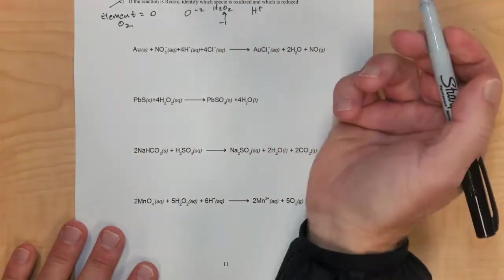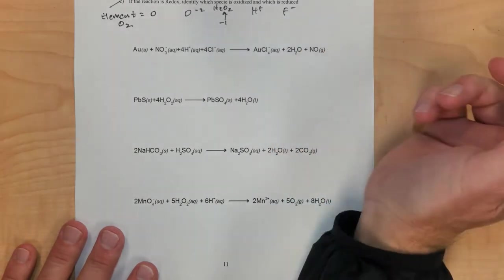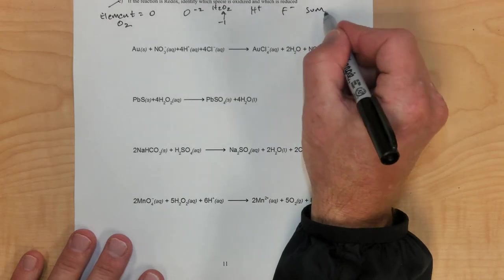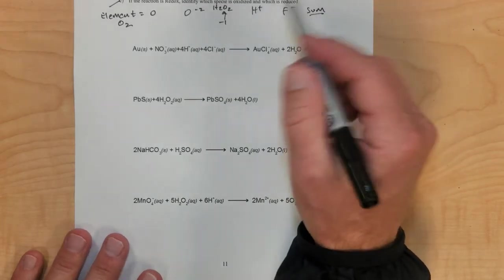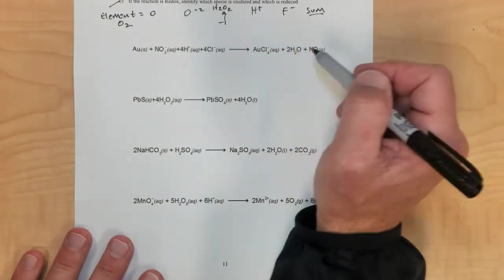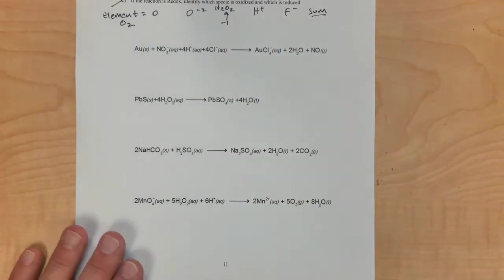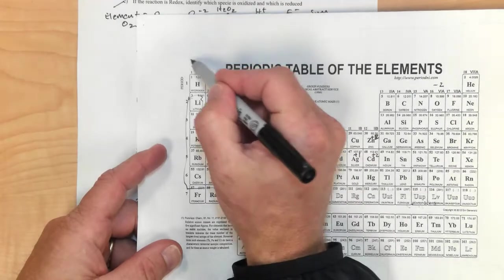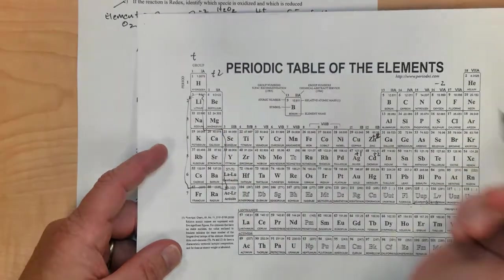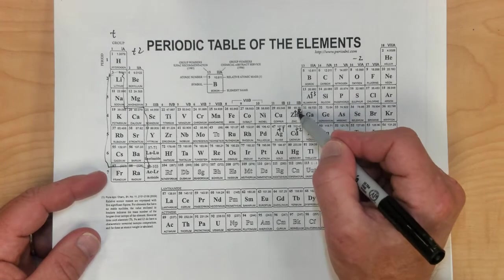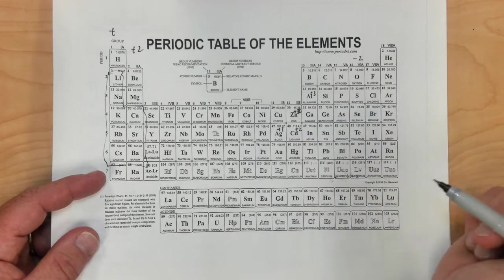Hydrogen is positive 1 as long as it's with nonmetals. Fluorine is always negative 1. Make sure you use the sum rule correctly — when adding things up in a formula, they always have to sum to whatever charge is in the upper right-hand corner. From your periodic table, group 1 elements are positive 1, group 2 are positive 2. You can assume aluminum is positive 3, zinc plus 2, cadmium plus 2, and silver positive 1.